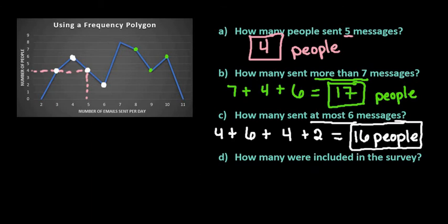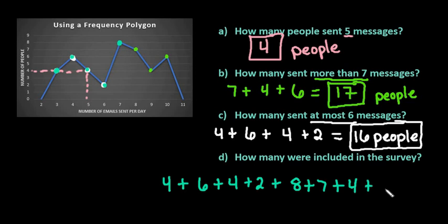And then the last question asks us how many total people were included in the survey. So what we want to do is we want to take all of these numbers. So we would start with four and then we would add the next one which is six plus four, basically we could look at what we had before plus two plus we had eight that sent seven plus seven plus four plus six.